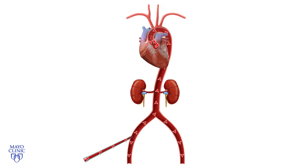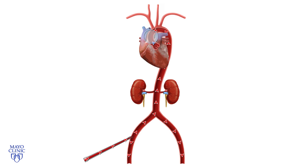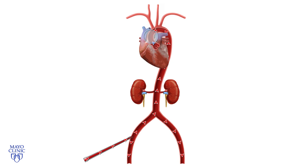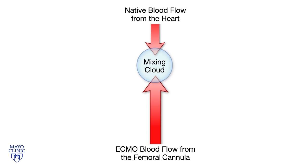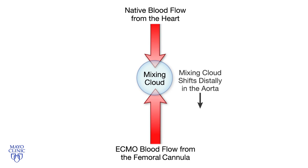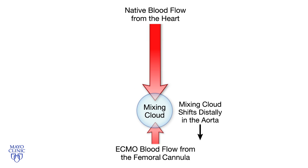Upon return of cardiac function, when the heart starts to beat and the aortic valve begins to open, the situation becomes quite unique. Because the peripherally placed ECMO cannula is pumping blood in a direction that is retrograde to the native blood flow, the two circulations merge or mix together in a location somewhere between the aortic valve and the arterial cannula. As left ventricular function is restored and contractility increases, the mixing cloud may shift distally in the aorta towards the arterial cannula. The same shift can occur if the ECMO blood flow is decreased.